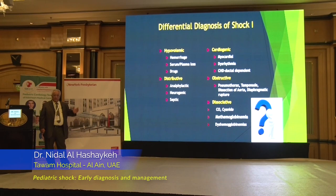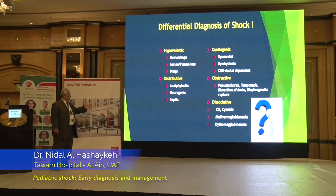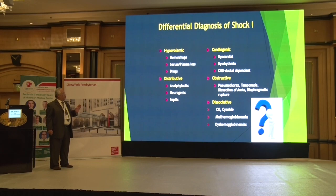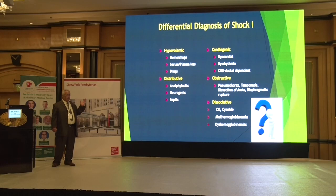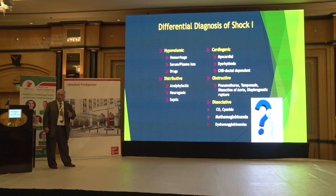Now the differential diagnosis of shock — this is for academic reasons, because shock is shock. The hypovolemic type is the most common cause of shock all over the world in all ages. If it is due to trauma, it is the hemorrhagic type. It can also be due to loss of plasma or serum, such as in burns, or can be caused by drugs.